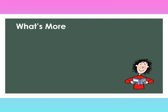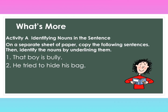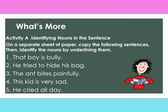Great job! What's More — Activity A: Identify the nouns in each sentence. On a separate sheet of paper, copy the following sentences and underline the nouns. Number one: That boy is a bully. Number two: He tried to hide his bag. Number three: The ant bites painfully. Number four: This kid is very sad. Number five: He cried all day.